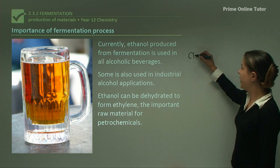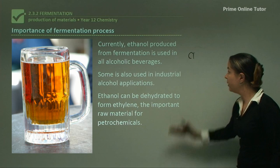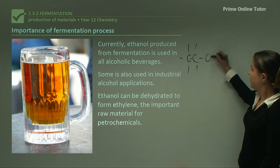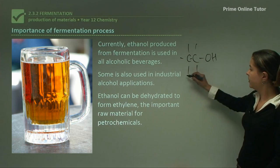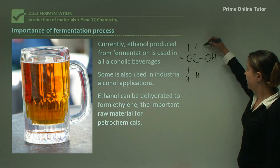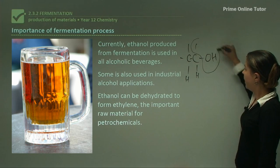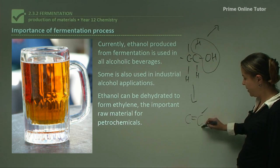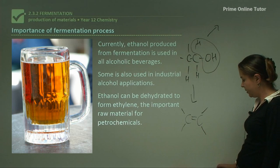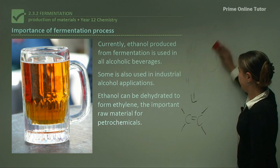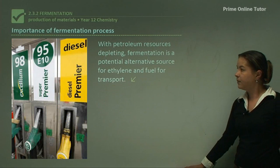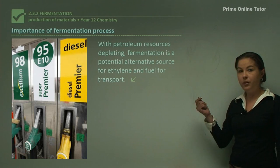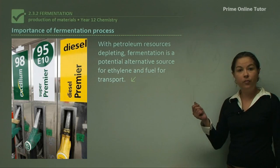If we have ethanol and we dehydrate it — which means to take off a water molecule — what we're left with is ethene, or ethylene, which is a very important alkene in the petrochemical industry. With petroleum resources depleting, fermentation is a potential alternative source for ethylene and also for fuel for transport.